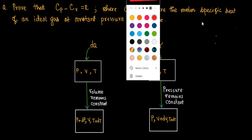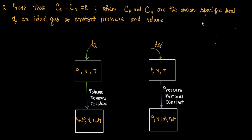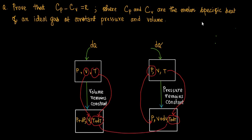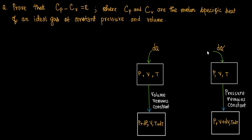On the left-hand side, when heat energy dQ is supplied at constant volume, volume remains V but temperature increases from T to T plus dT. On the right-hand side, pressure remains constant and temperature also increases to T plus dT. The change in temperature dT is the same for both cases.